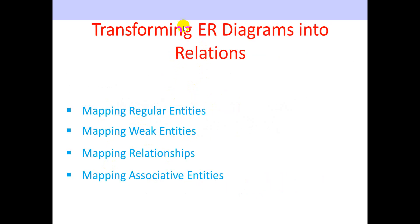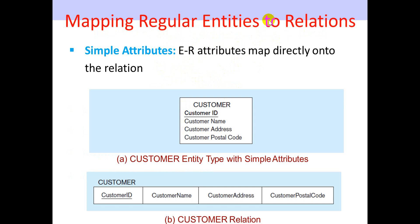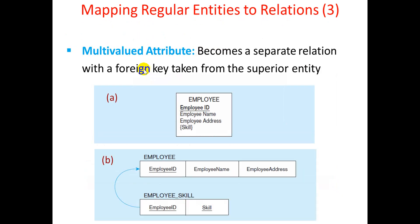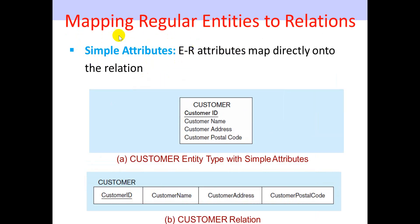So we will convert the ER model to the relational model. The ER diagram has entities and relationships. We have regular entities, weak entities, and associative entities. We also have binary and other relationships. For a regular entity, the attributes can be simple attributes, composite attributes, and multi-valued attributes.